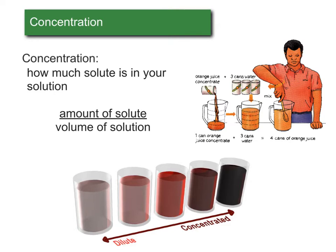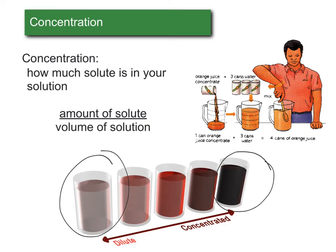So if you had a very dilute solution of cranberry juice, for example, you can see that over here it's very light in color, and then as it gets more concentrated, it would get darker and darker.